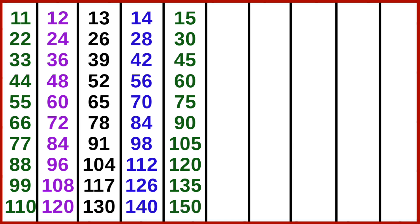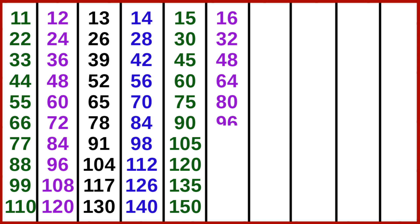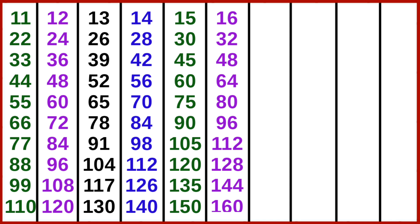16 ones are 16, 16 twos are 32, 16 threes are 48, 16 fours are 64, 16 fives are 80, 16 six are 96, 16 sevens are 112, 16 eights are 128, 16 nines are 144, 16 tens are 160.